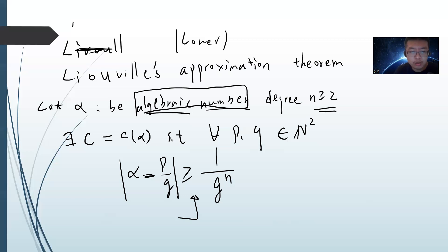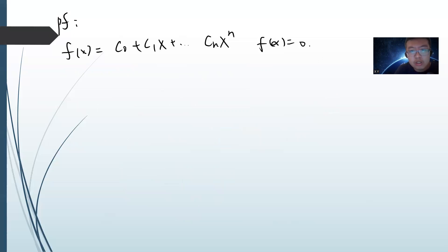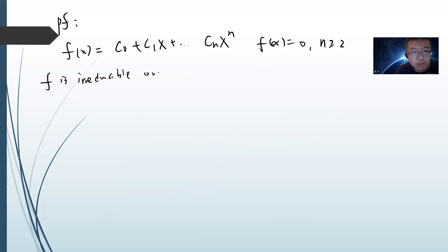Let's do the proof. We assume f(x) = c₀ + c₁x + ... + cₙxⁿ where f(α) = 0, n ≥ 2, and f is irreducible over Q. We pick any p/q.